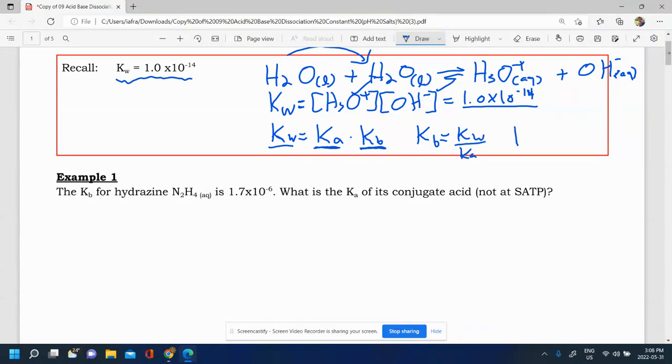Or you could also do that Ka is equal to Kw over Kb. These relationships are useful, especially if you don't have a Kb value found in your table or a Ka value found in your table, but you have maybe one value only. You can find the other by using that relationship. So where does that come from? Let's take a look at a simple example.